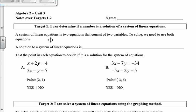A system of linear equations is two equations that consist of two variables. To solve, we need to use both equations, so there are two unknowns: x and y.